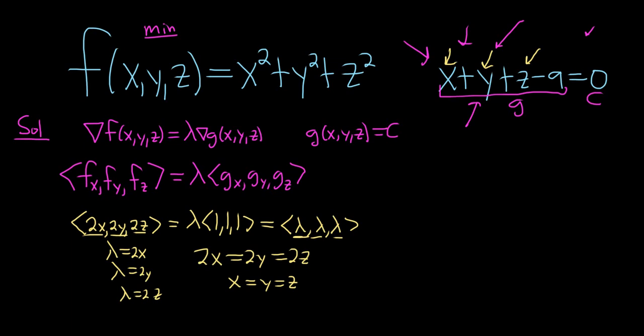You may think we're stuck but we're not. This is the point where we go to our constraint. So our constraint is up here. We know they're all the same so we can write this as x plus x plus x minus 9 equals 0, so 3x minus 9 equals 0.